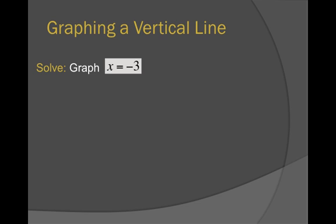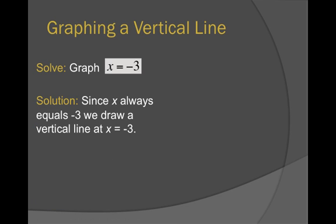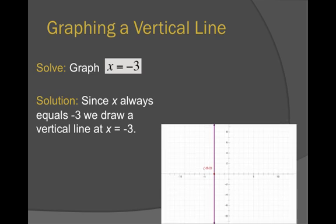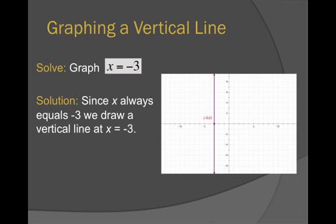What about a vertical line? A vertical line means x is stuck at some number. Here we want to graph x equals negative 3. Since x is always at negative 3, we're going to draw a vertical line at negative 3. Again, how are you going to do this in MyMathLab?